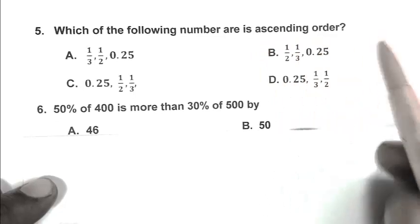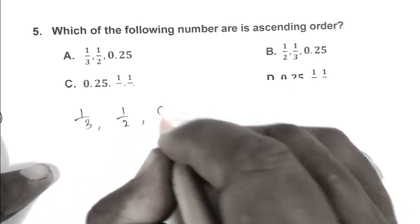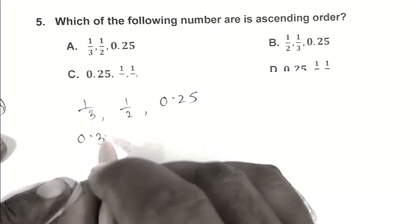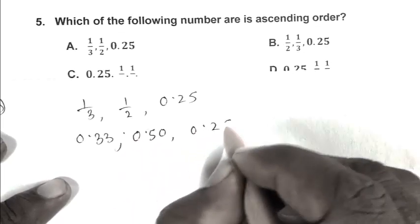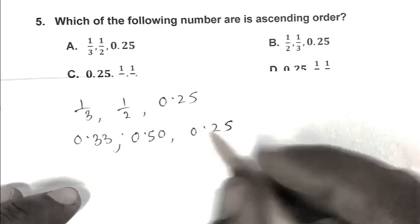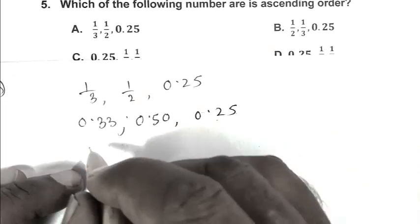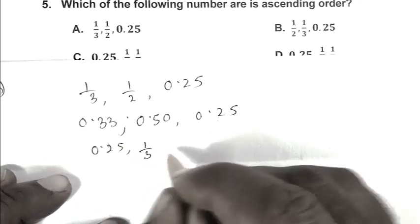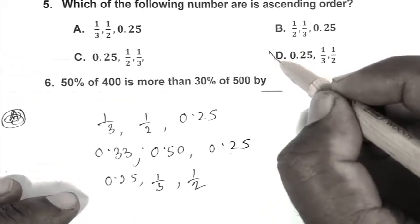Question number 5. Which of the following numbers are in ascending order? The numbers are 1 upon 3, 1 upon 2, and 0.25. Converting to decimal: 0.33, 0.50, and 0.25. The ascending order is 0.25, 1 upon 3, and 1 upon 2. So D is the right answer.